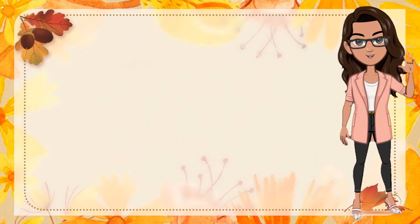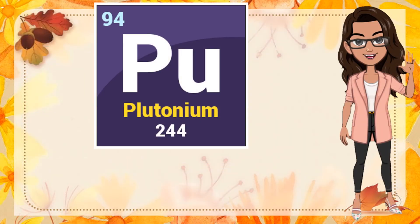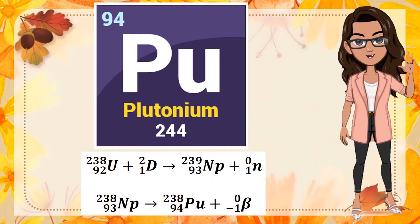After the discovery of neptunium, the decay of this element led to the discovery of another element bearing an atomic number of 94. Seaborg, together with McMillan, Wahl, and Kennedy, bombarded uranium with deuterons to form neptunium-238 with a half-life of 2 days, which then decayed into plutonium with a half-life of 92 days.